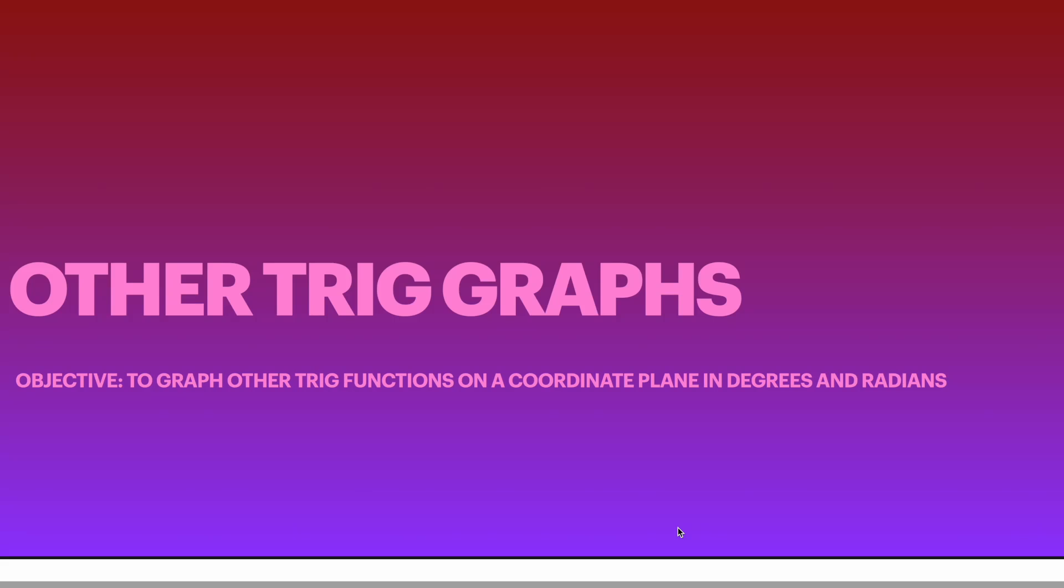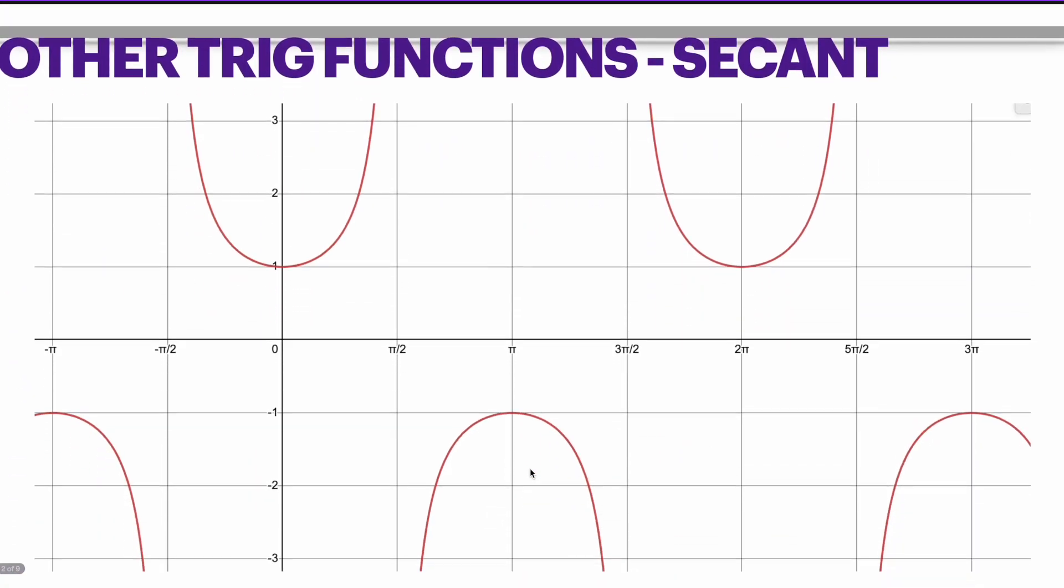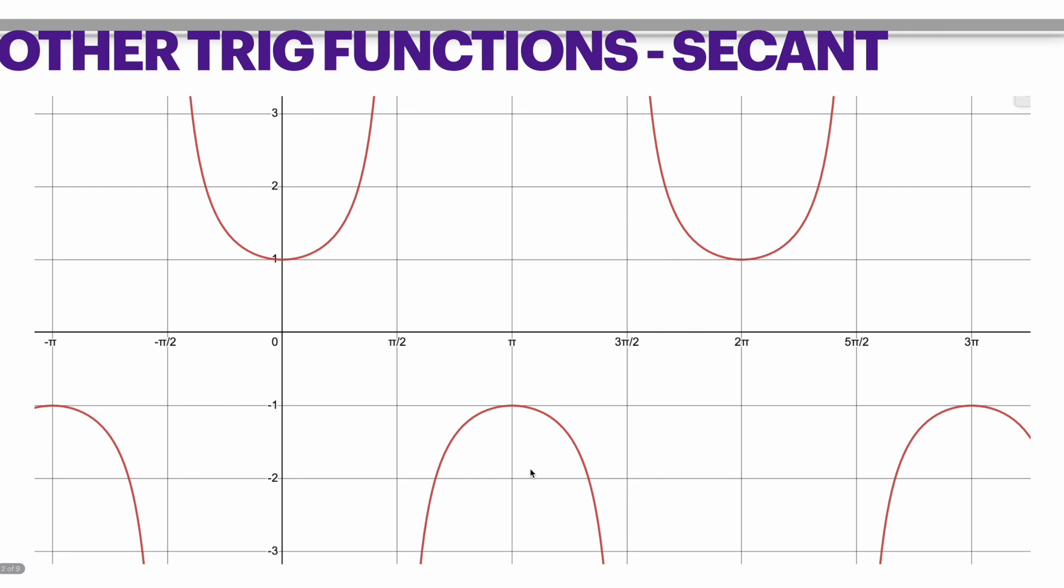In this lesson we will learn about other trig graphs besides just sine and cosine. For example, the graph of secant. Now remember that secant is going to be the reciprocal of cosine.